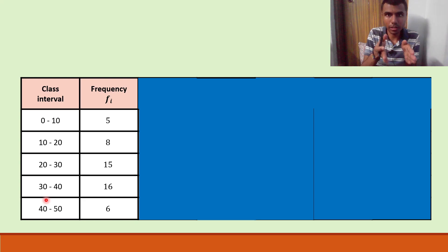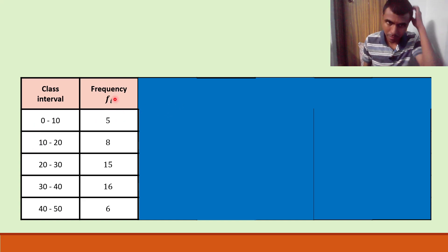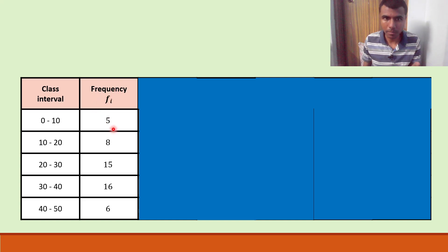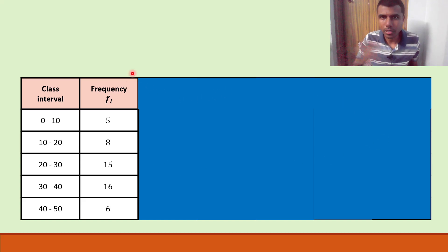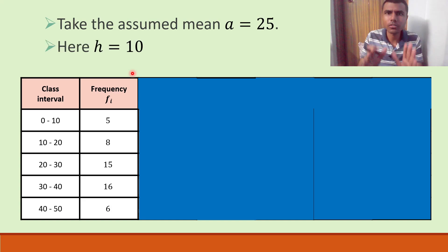First, write them vertically — this is a class interval, and this is my frequency, which I'm denoting by fi. I've covered other columns with animation so you'll see them once they're needed. Right now we'll take assumed mean a as 25, and h is 10.